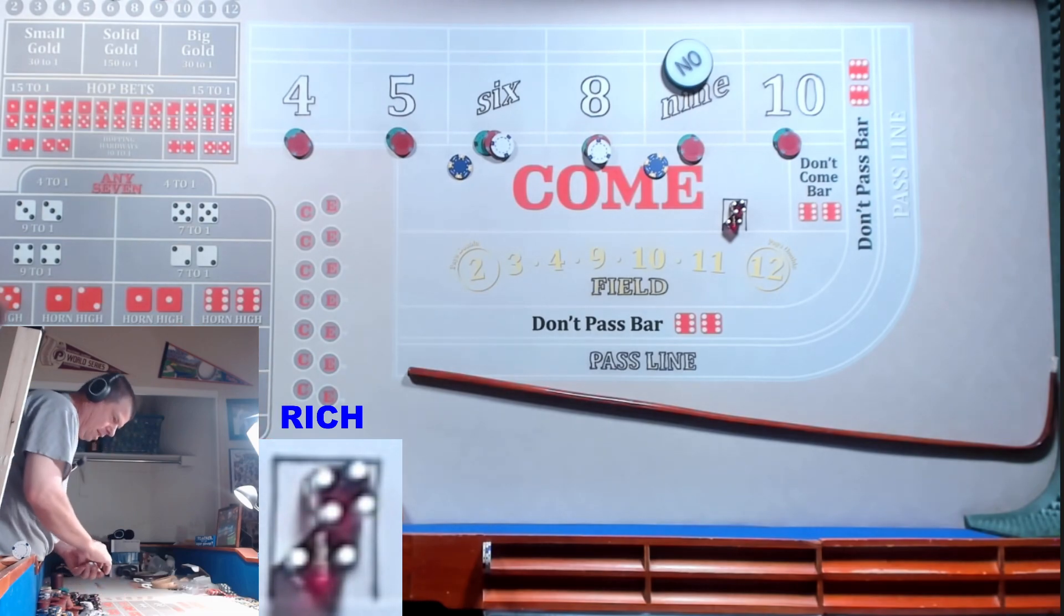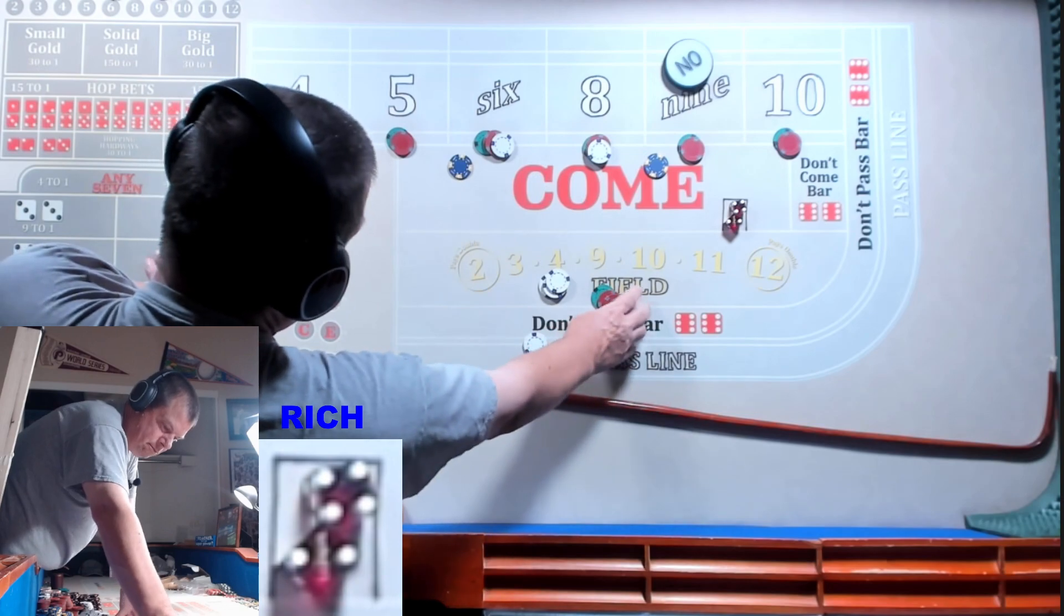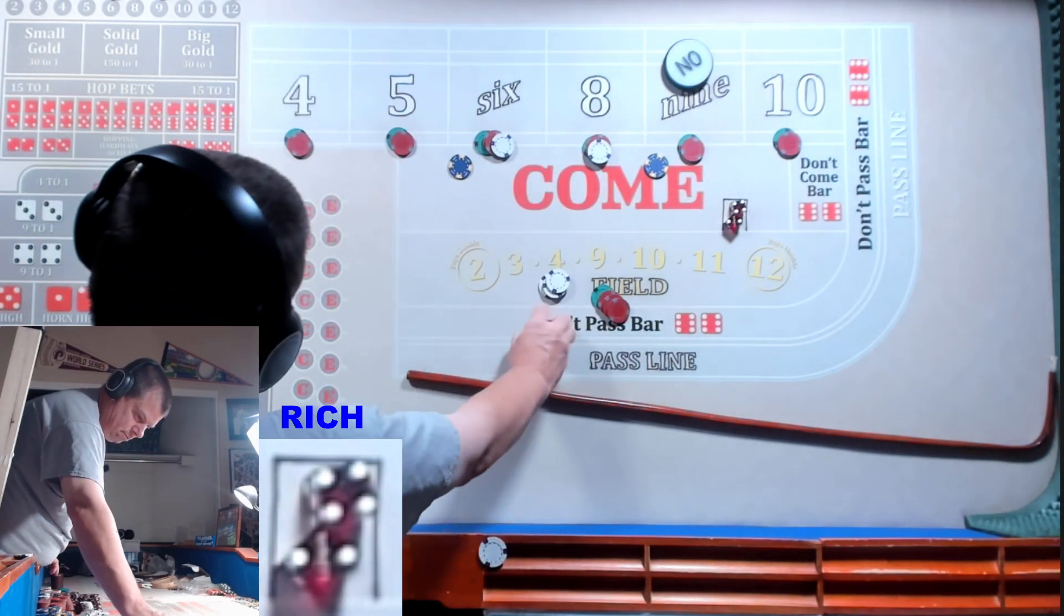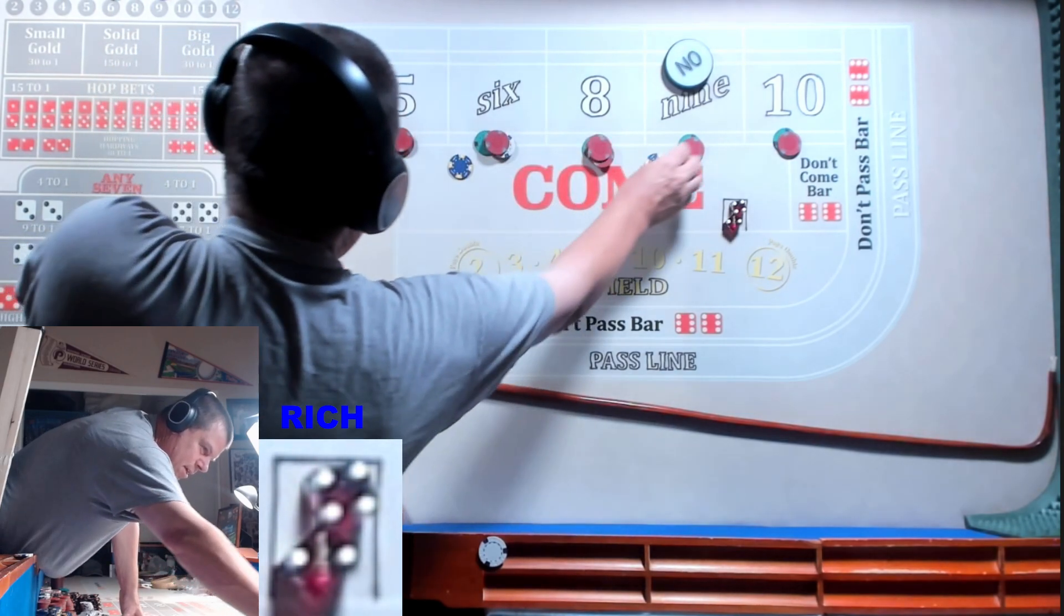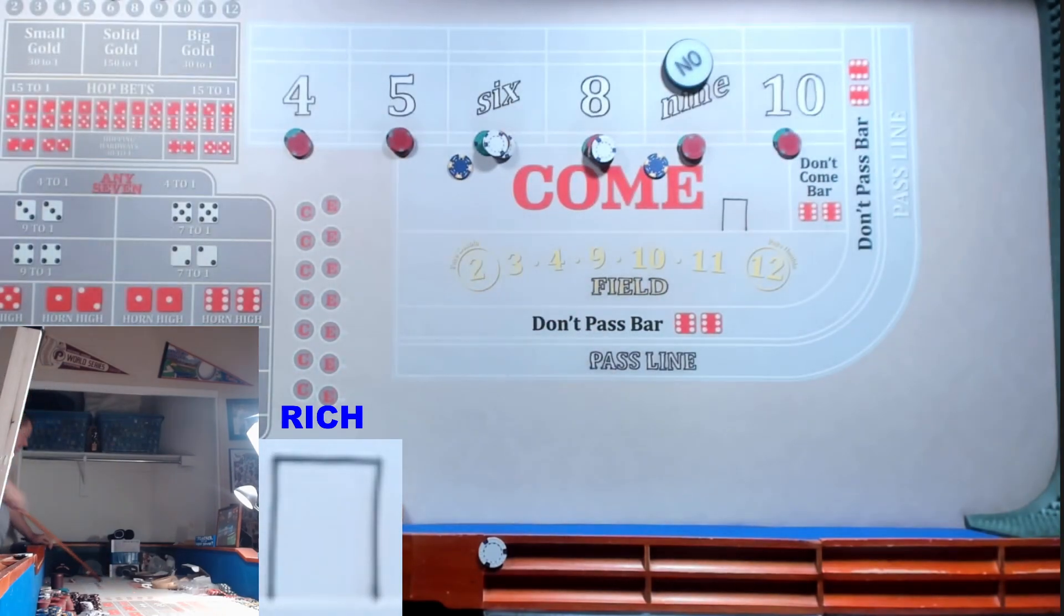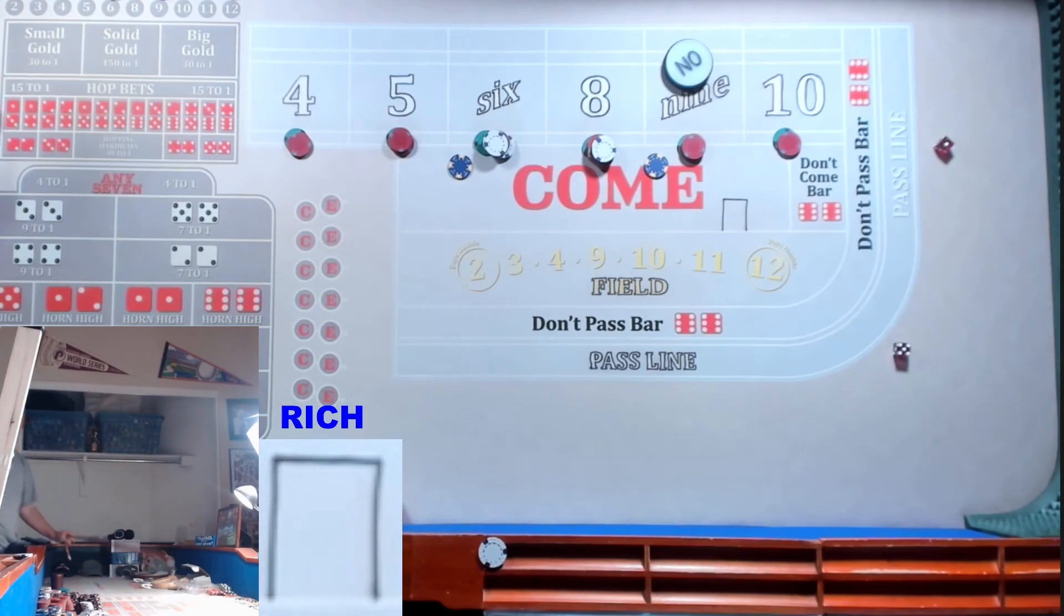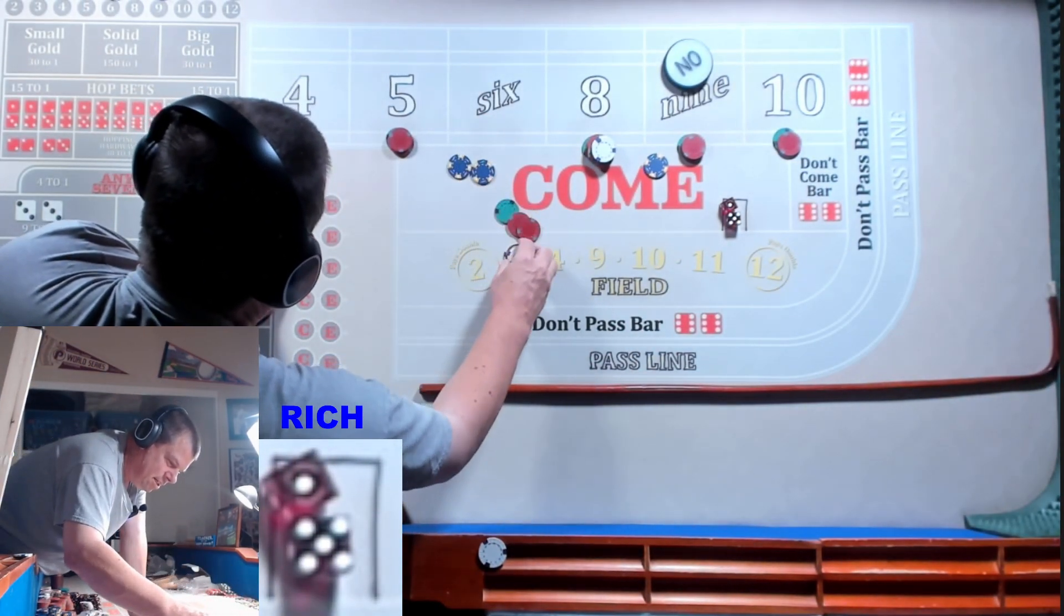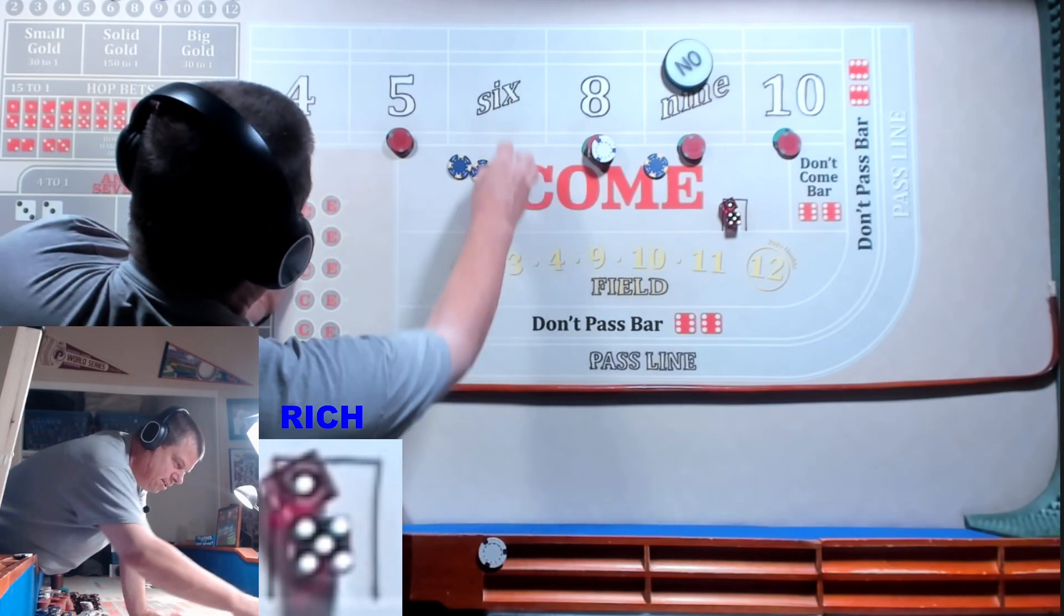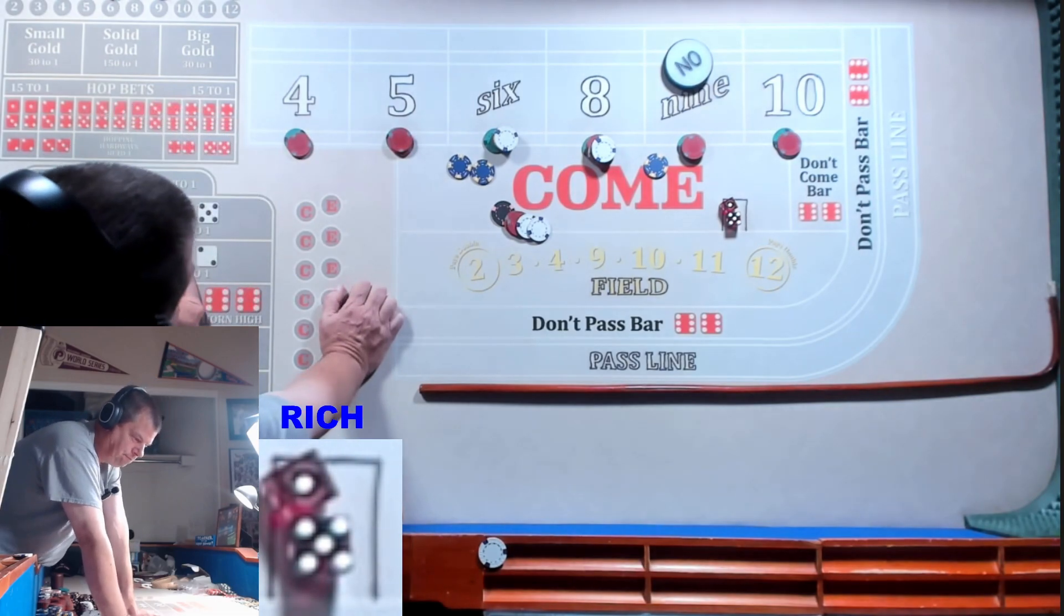We got a 6 easy. Here we go. $42. Okay, we're going to press $44 inside. We got a 6 easy. What happens? Market. You got 48 on it, it's going to pay you 56 but you get double, so it's 112. There you go.